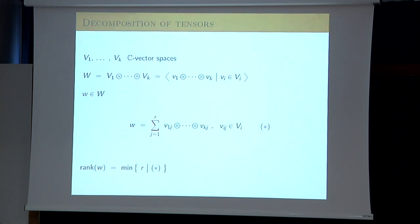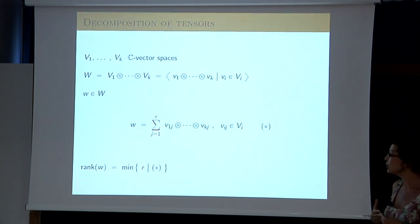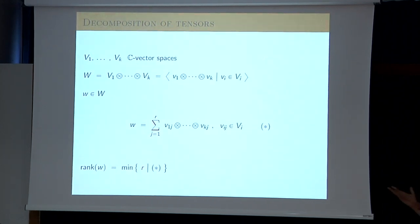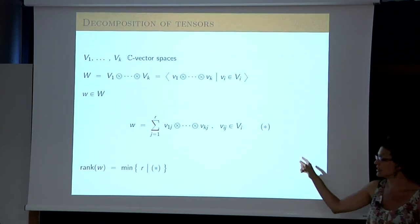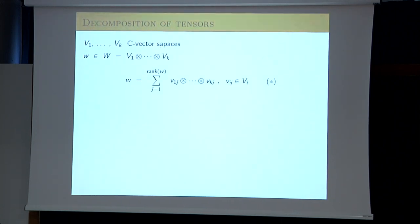The minimum number of summands in such a decomposition is called the rank of the tensor. Every vector has a rank, which is the minimal number of indecomposable elements that you need to write it as a sum of primitive or indecomposable tensors.